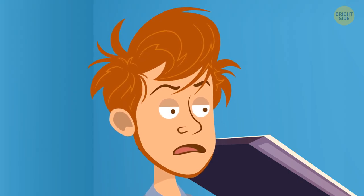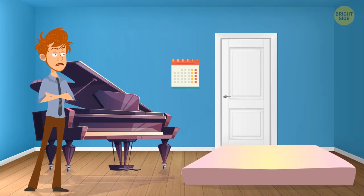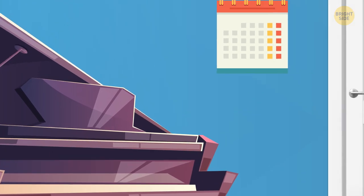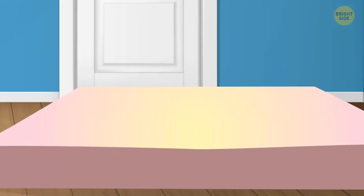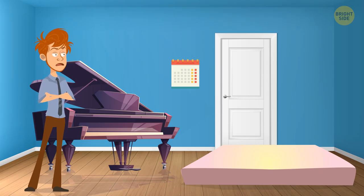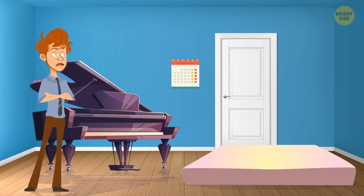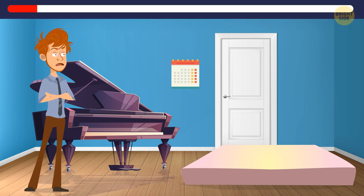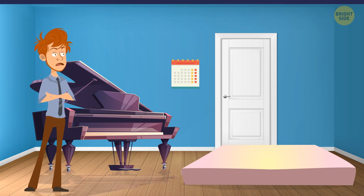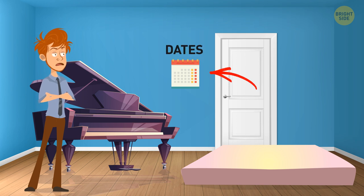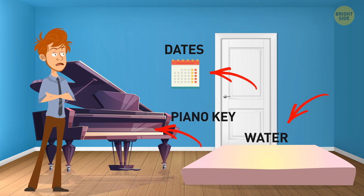Several robbers locked Fred in a room. The room is almost empty. There's a piano with notes, a calendar, and a waterbed. The room is locked from the outside. Can you guess what Fred ate and drank and how he escaped from the room? To crack this riddle, you definitely need to think outside the box. Fred ate the dates on the calendar, got water from the waterbed, and used a piano key to escape.